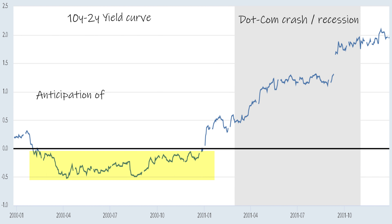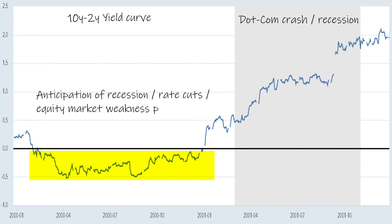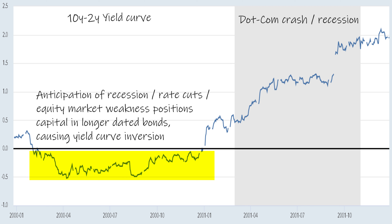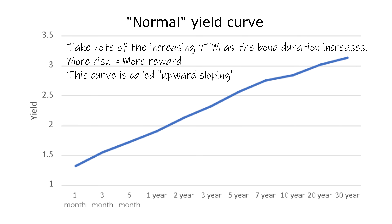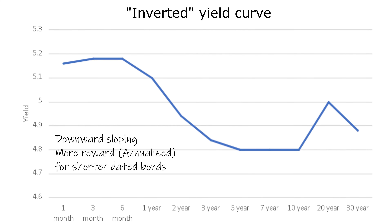As a result of the rotation of capital to longer-dated maturities, these forces of supply and demand cause the longer-dated bond prices to rise faster than short-dated bonds. And because of the inverse nature of bond prices and their yields, longer-term yields fall below short-term yields, forming an inverted yield curve.